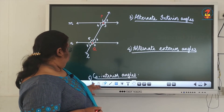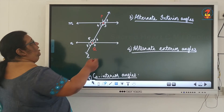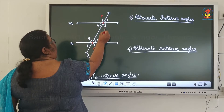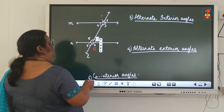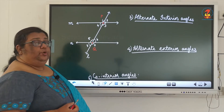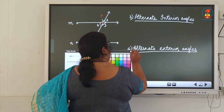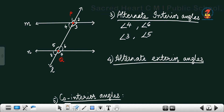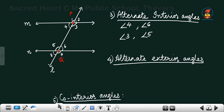Our next set is alternate interior angles. As the name suggests, they should be interior angles. The interior angles here are 3, 4, 5, and 6. For alternate interior angles, if I take angle 4, the alternate angle will be angle 6. If I take angle 3, the other alternate interior angle will be angle 5. So angle 4 and angle 6, and angle 3 and angle 5 are the alternate interior angles.